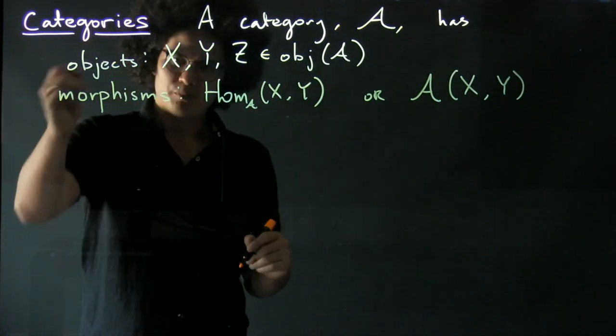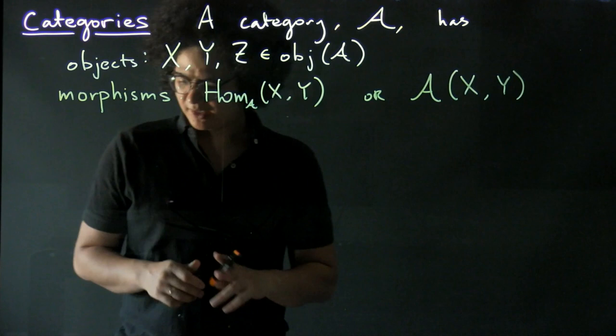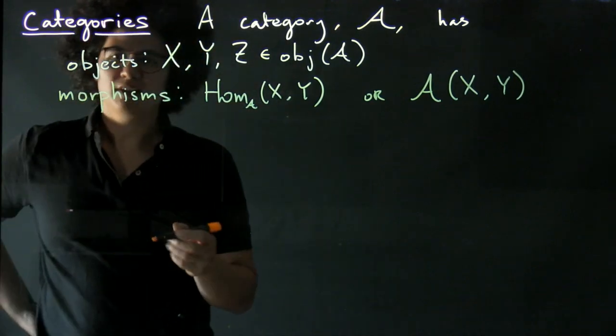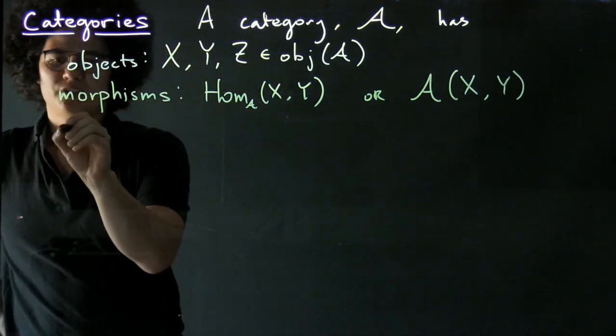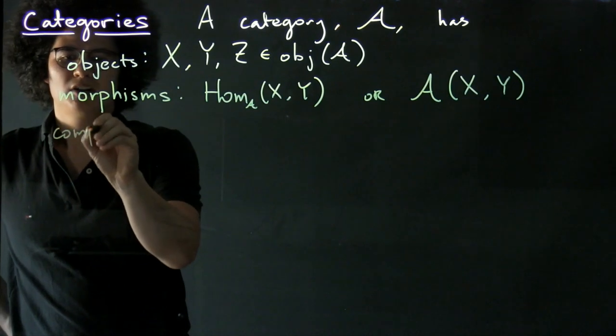Alright, so we have objects, we have morphisms. The next thing we talked about when we were going through our examples of categories was composition. So we have a composition law.